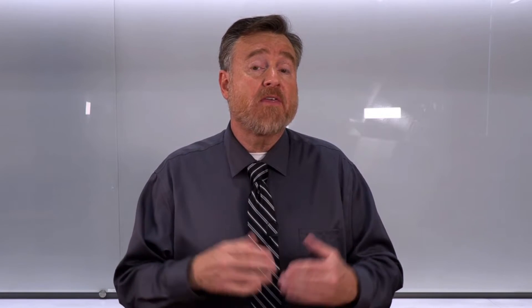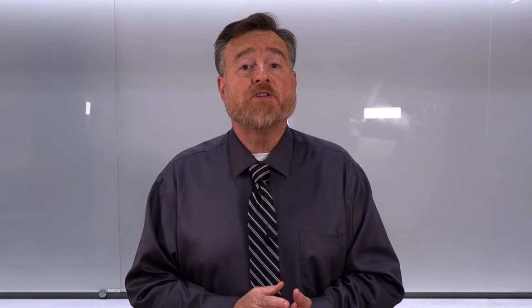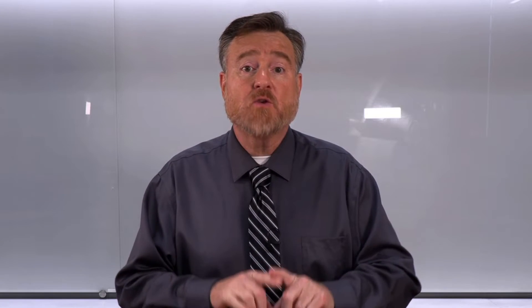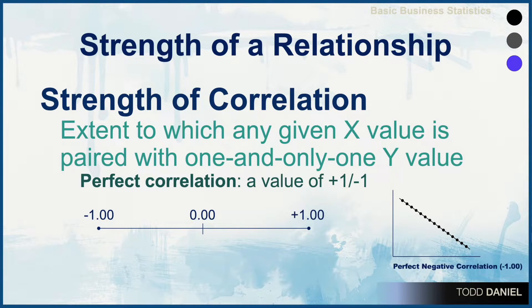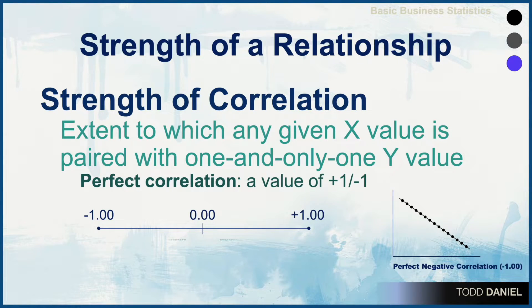We can also consider the strength of the relationship. Correlation ranges between 1 and negative 1, with values closer to either extreme being stronger. The strength of the correlation is the extent to which any given x value is paired with one and only one y value. In a perfect correlation, every x value would be paired with only one y value and all data points would line up directly on the regression line. Most correlations, however, are not perfect. Correlations close to 0 are weak, but as they approach either positive 1 or negative 1, those relationships grow stronger.